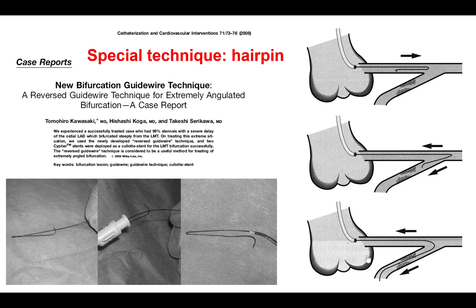Another technique useful for wiring through tortuous lesions — especially those at more than a 90-degree angle from the main vessel — is the reversed guide wire or hairpin technique. A polymer-jacketed wire such as the Fielder FC or Whisper is bent about 3 cm from the tip and advanced into the guide catheter with the knuckle in front. The knuckle is pushed into the vessel past the takeoff of the branch to be wired, and then when the wire is withdrawn, the knuckle enters the branch and achieves wiring.